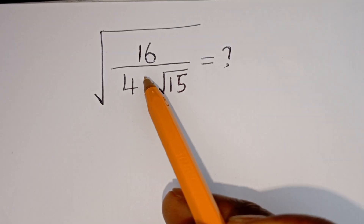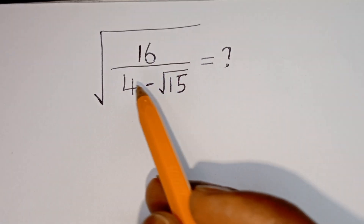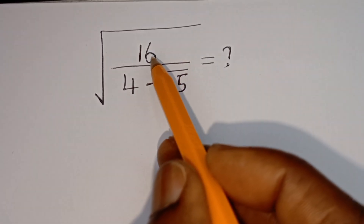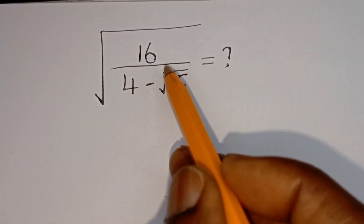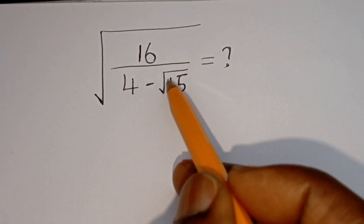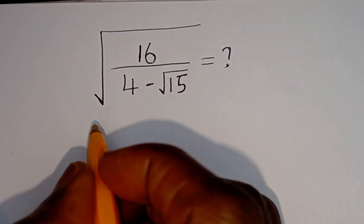Hello! How to simplify this square root problem without using a calculator? We have square root of 16 divided by 4 minus square root of 15.